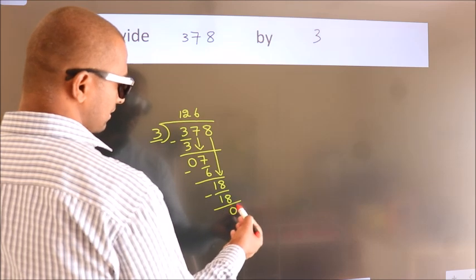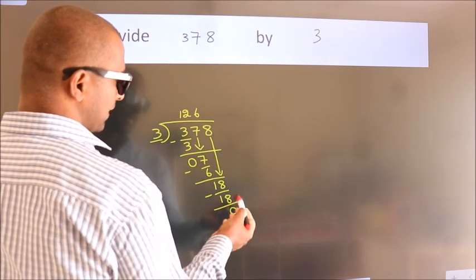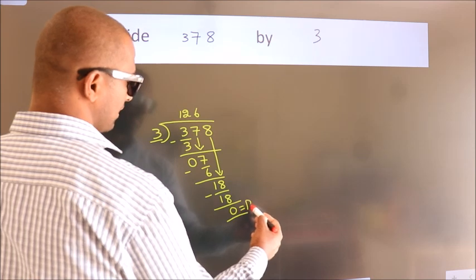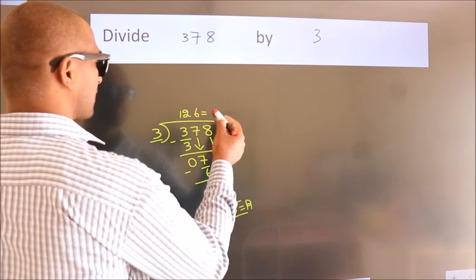After this, no more numbers to bring down. So we stop here. This is our remainder. This is our quotient.